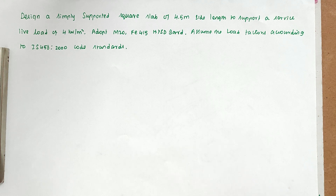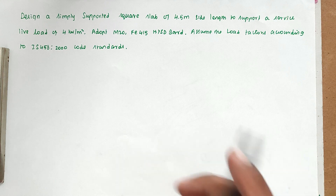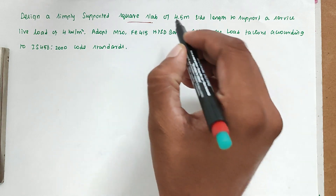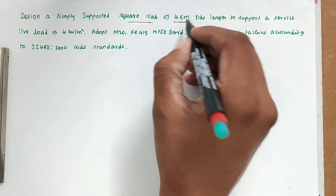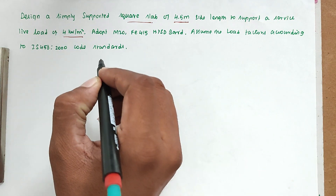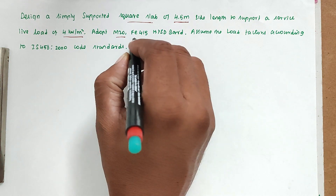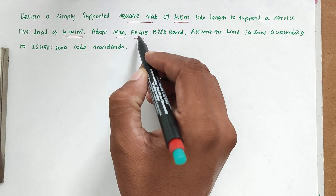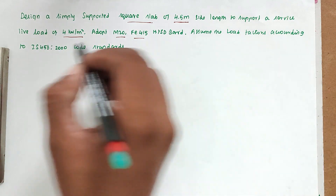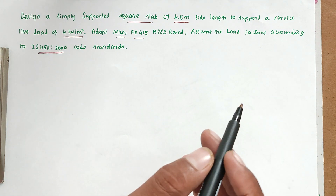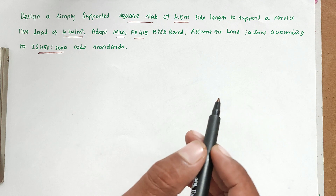Hello friends, welcome to Civil Engineering Exam. Today we are going to see a problem related to limit state design of slabs under the topic of yield line theory. The problem is: design a simply supported square slab of 4.5 meter side length supporting a service live load of 4 kN/m². Use M20 and Fe415 (fck = 20, fy = 415). Assume load factor according to IS 456:2000.